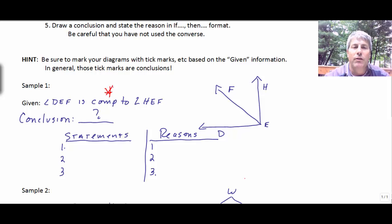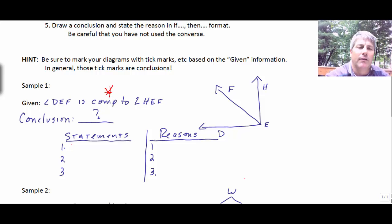Well, hopefully we know that if two angles are complementary, then we know that their sum is 90 degrees. And also, if two angles are complementary, then they form a right angle. And that's the one I would use in this example.